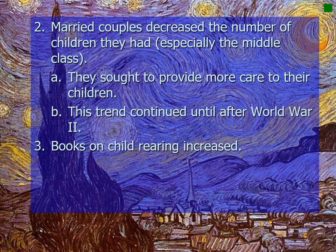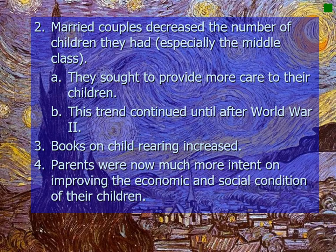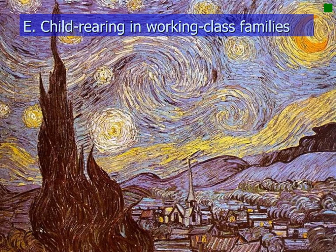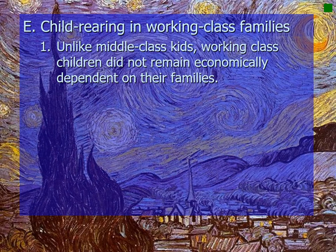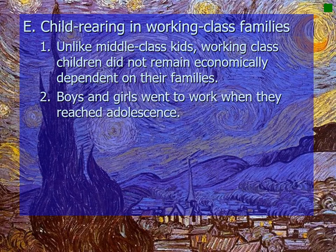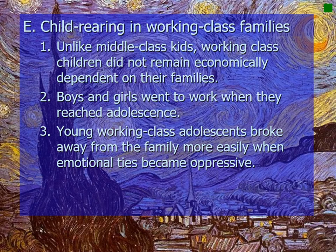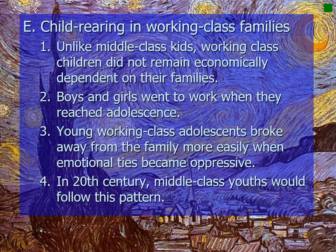Books on child rearing also increased, and parents became much more intent on improving the economic and social condition of their children. Lower mortality rates for children meant parents became more emotionally involved, and mothers increasingly breastfed their own children rather than hiring wet nurses. Working class children, unlike middle class children, did not remain economically dependent on their families — boys and girls went to work when they reached adolescence and broke away from the family more easily.